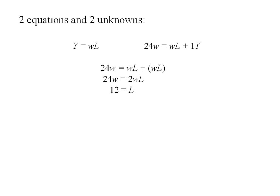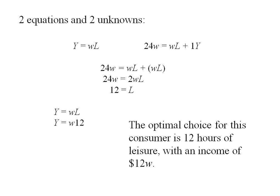And if they choose 12 hours of leisure, what's their income? Well, it'll be equal to the amount of the composite good, or W times L. So in this case, it'll be W times 12. The optimal choice for this consumer, 12 hours of leisure, and they'll make an income of $12 times W.